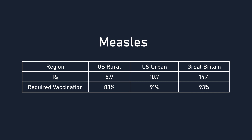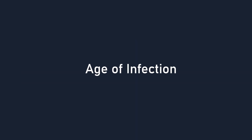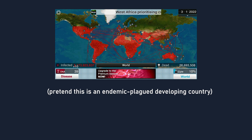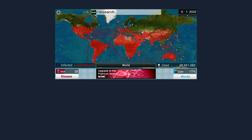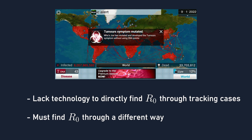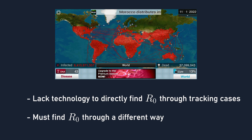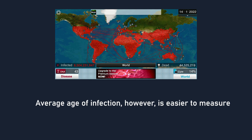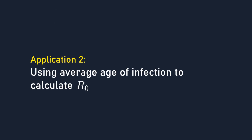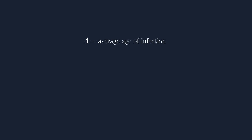Imagine a scenario where, in your developing country plagued by a long-term endemic, you lack the technology to track each infected case and directly find out what R0 is. Hence, you need an alternate way of finding R0 in order to save your country. Luckily, the average age at which patients catch the disease can be tracked more easily, and that can help determine R0. This is our second application: using average age of infection to find out R0. It turns out that with A being the average age of infection and L being the life expectancy, A is equal to L over R0 minus 1.